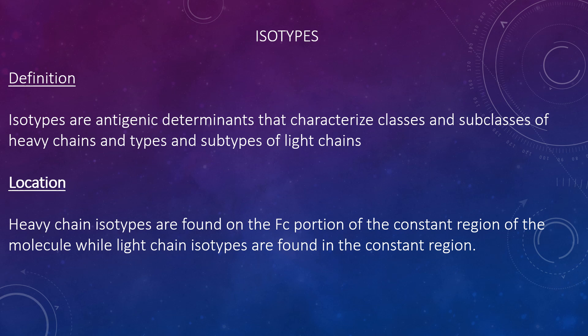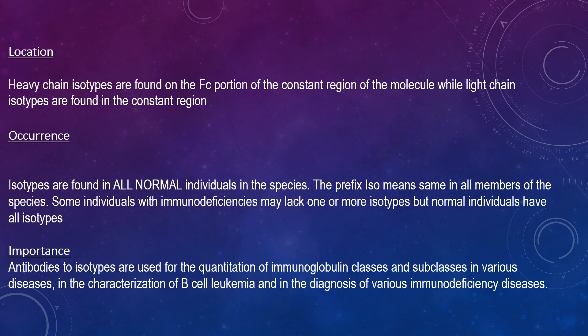Antibodies to the variable region are present perhaps only because a few copies of each different variable region are represented in the IgM, and thus effective immunisation does not occur. The determinants recognised by such antibodies are called isotypic determinants, and antibodies to those determinants are called anti-isotypic antibodies. Each class, subclass, type, and subtype of immunoglobulin has a unique set of isotypic determinants. Heavy chain isotypes are found on the Fc portion of the constant region, while light chain isotypes are found on the constant region. Isotypes are found in all normal individuals of a species — the prefix 'iso' means the same in all members of the species. Some individuals with immunodeficiencies may lack one or more isotypes, but normal individuals have all isotypes. Antibody isotypes are used for quantification of immunoglobulin classes and subclasses in various diseases, in the characterisation of B-cell leukaemia, and in the diagnosis of various immunodeficiency diseases.